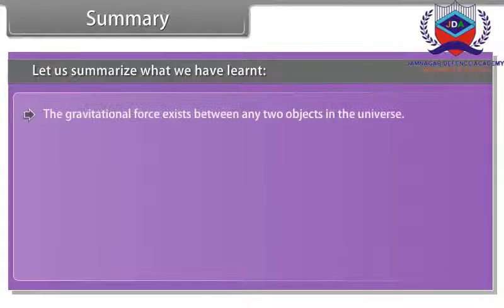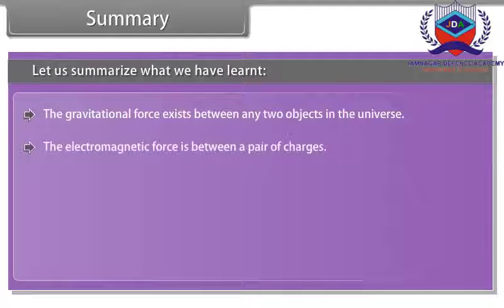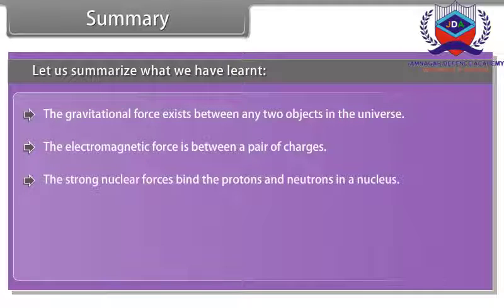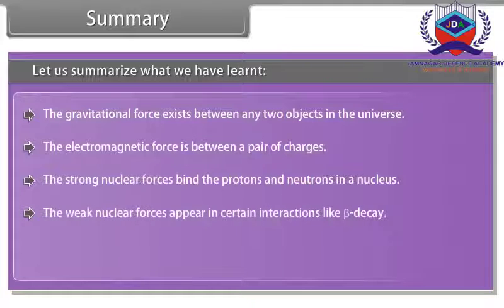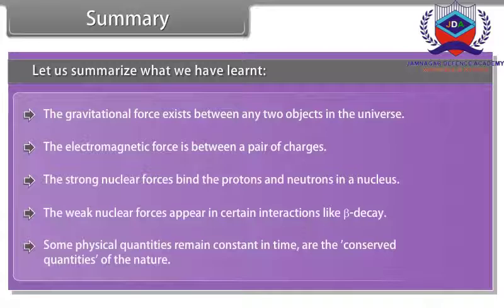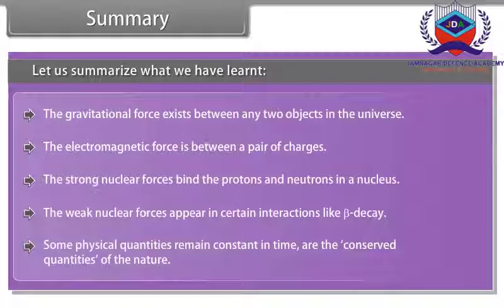The gravitational force exists between any two objects in the universe. The electromagnetic force is between a pair of charges. The strong nuclear forces bind the protons and neutrons in a nucleus. The weak nuclear forces appear in certain interactions like beta decay. Some physical quantities remain constant in time are the conserved quantities of nature.